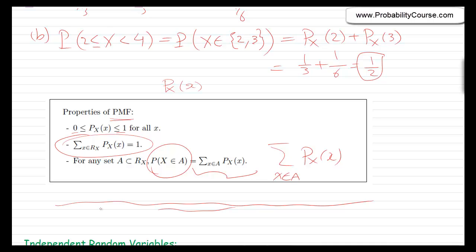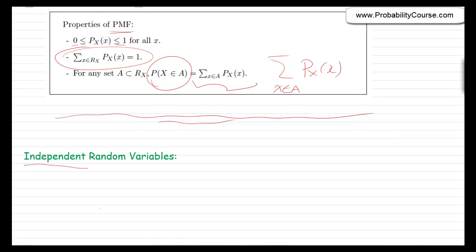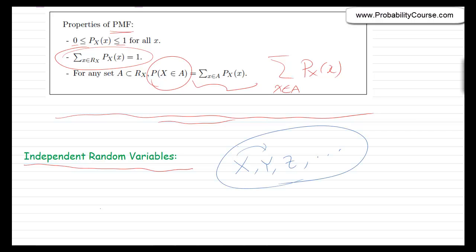Now let's talk about independent random variables. In real life, we usually work with more than one random variable — maybe x, y, z, and so on. In general, these random variables could be dependent: knowing the value of one might give information about the others. We will discuss dependent cases in more detail later. Today, we focus on the specific case where random variables are independent — knowing the value of one gives no information about the others. This is very similar to independent events discussed before.